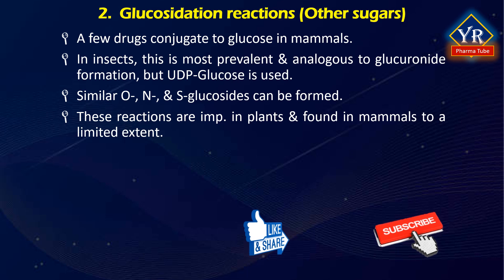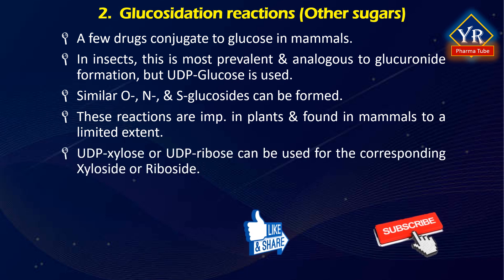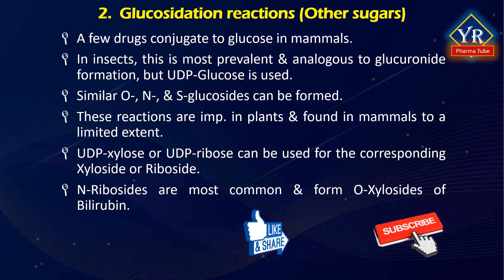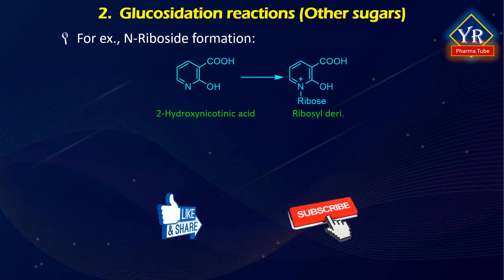Such reactions are also of importance in plants and have been found in mammals to a limited extent. In certain circumstances, UDP xylose or UDP ribose can be used, giving the corresponding xyloside and riboside products. N-ribosides seem to be the most common and may form non-enzymatically, but O-xylosides of bilirubin have been found and require a microsomal transferase enzyme for formation. An interesting medicinal example is that some barbiturates such as phenobarbital yield the N-glucoside.